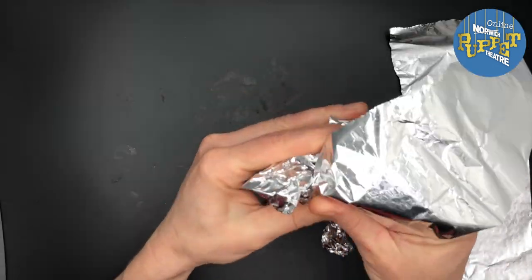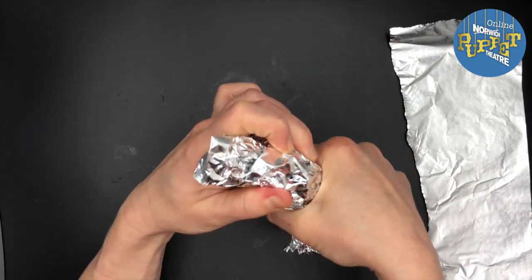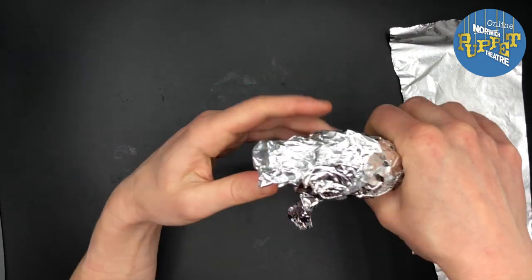Because I'm making an ox, I'm going to add a little bit of a hump onto his back. So I'm scrunching a little bit more there.